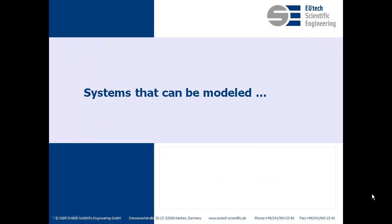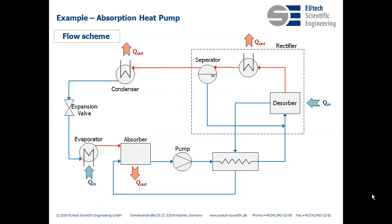We'll start with the systems that can be modeled. Our first example is an absorption heat pump. Before we go over the process model in Simulink, here's a basic explanation of the process itself. This is the flow scheme of a single-stage ammonia water system, composed of four main parts: the evaporator, the absorber, the desorber, and the condenser. The system works by cycling varying concentrations of ammonia water solution, and due to phase changes in the solution, heat is gained from the system.